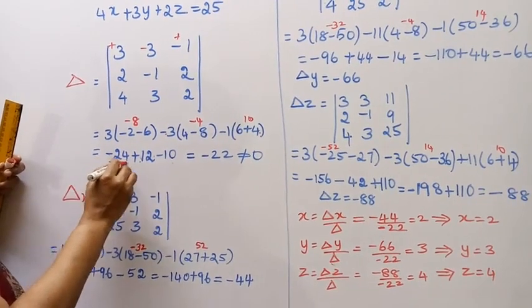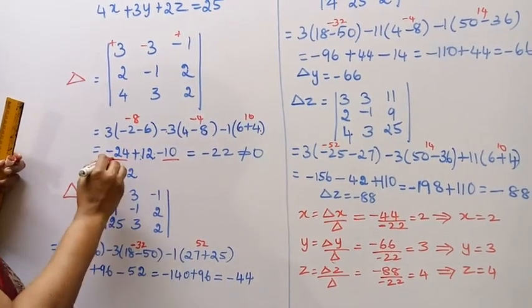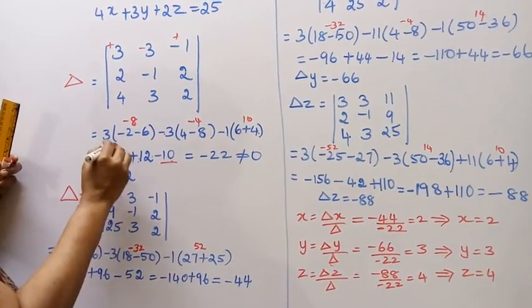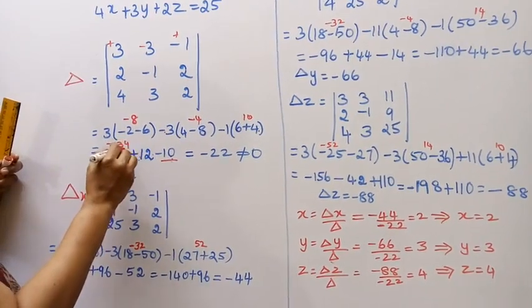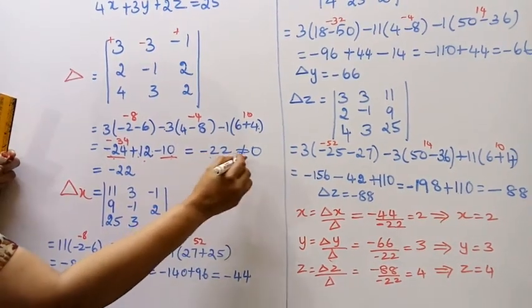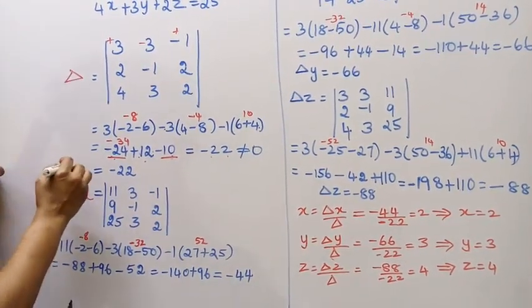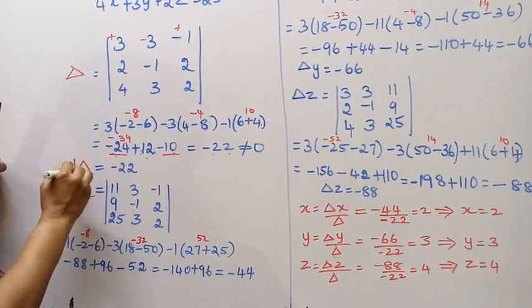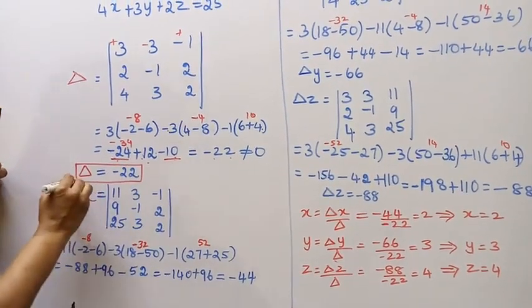This is minus 24 minus 10, that is minus 34, plus 12, minus 22. We get it does not equal to 0, so delta equal to minus 22.